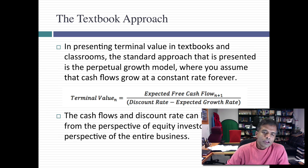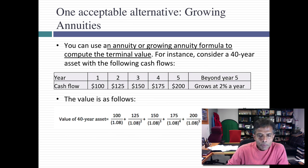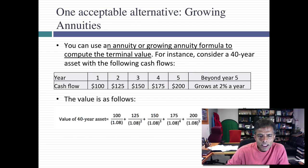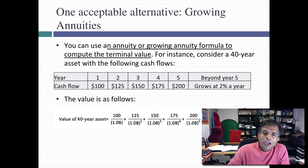Now if you've been told this is the only way to get a terminal value, you've been lied to, because there are at least two other ways which are legitimate ways within the intrinsic value framework. The first is to assume instead of a perpetuity — where your cash flows continue forever — that your cash flows will continue only for a finite period, a 20-year or 25-year period. If you assume a constant cash flow, it's called an annuity. If you assume a growing cash flow, it's called a growing annuity. And there are present value equations you can use to capture what the value of those growing annuities or annuities will be.